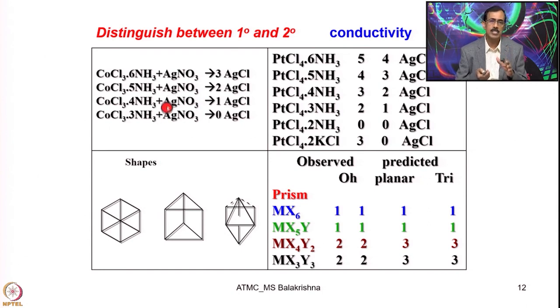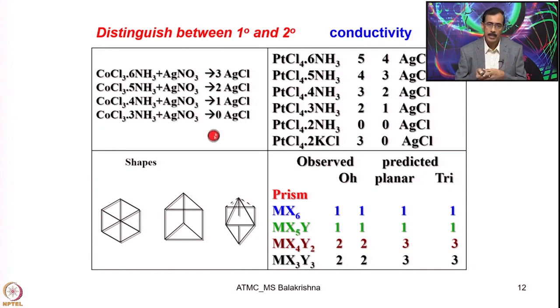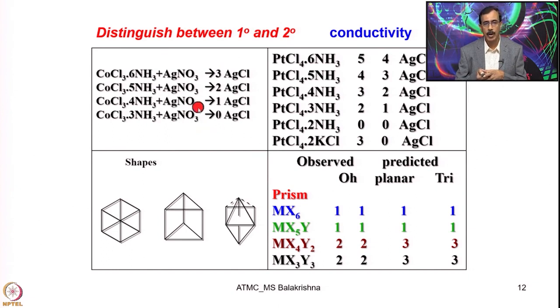There was no answer from the chain theory proposed by Blomstrand and Jorgensen for these results. Despite all this work, the rivalry continued and Jorgensen was not ready to accept — he went on criticizing Werner's work.